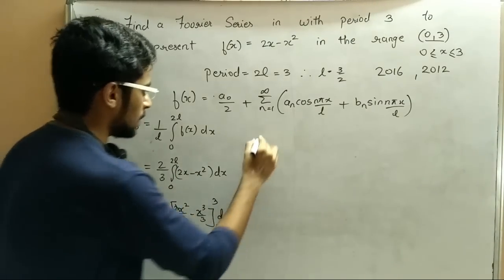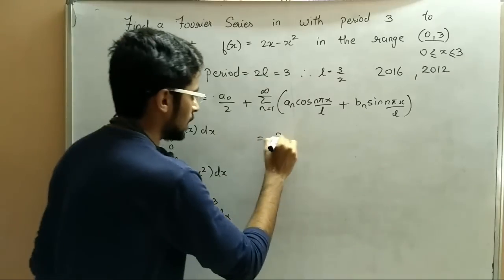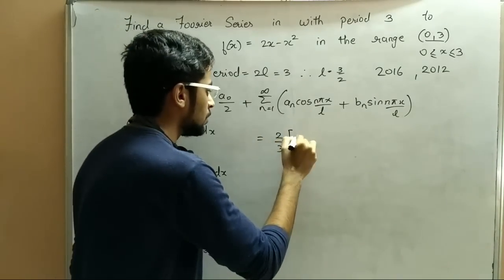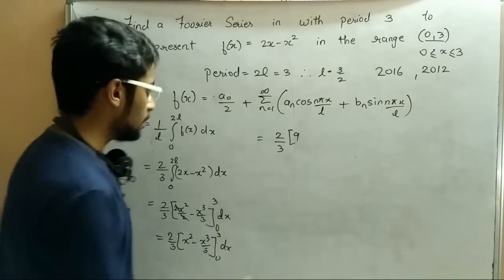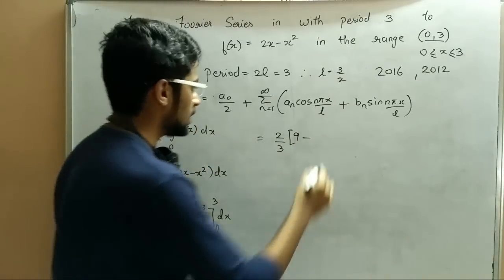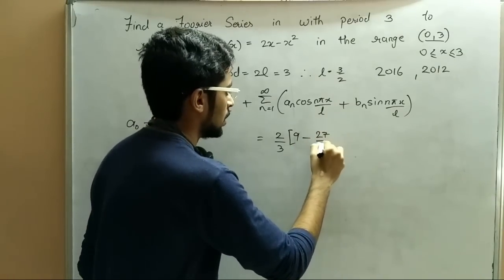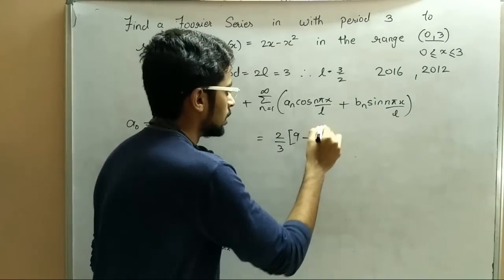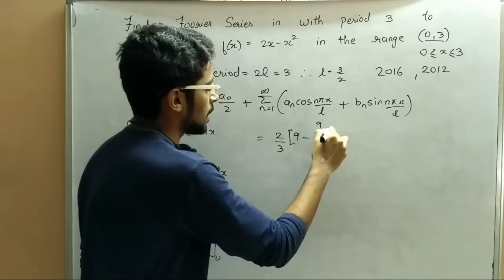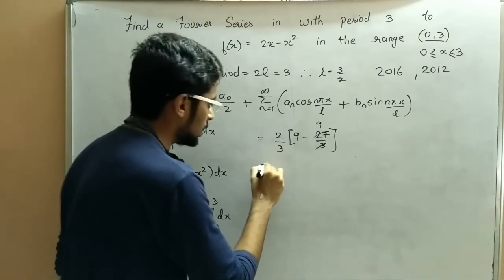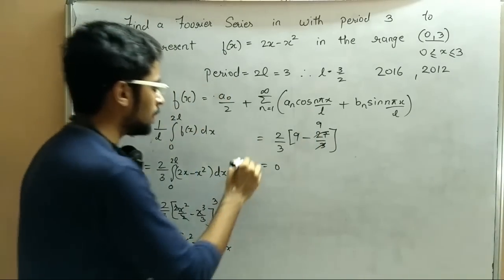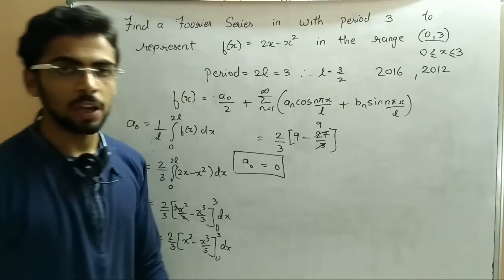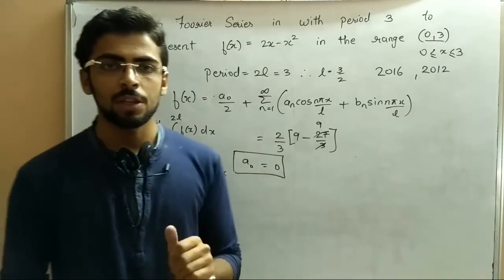Now when we apply the limits, putting x=3 we get 3² = 9 minus 27/3, and putting x=0 that part becomes 0. Solving this bracket gives 0 as well. So what we get finally is A0 equals to 0. We will remember this value and now calculate An.